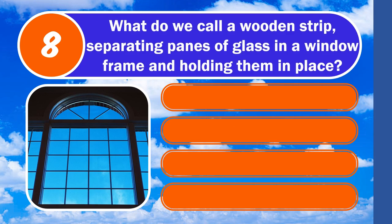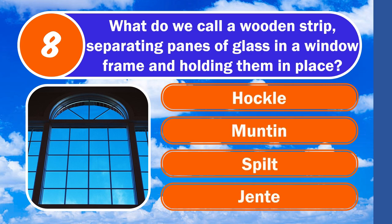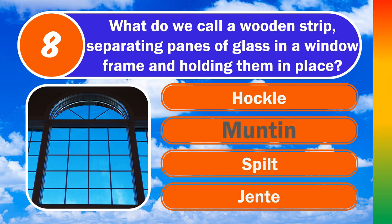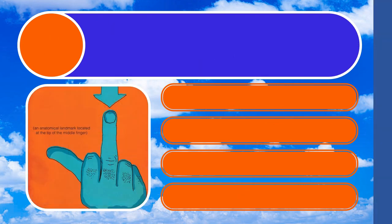Question number eight: what do we call a wooden strip separating panes of glass in a window frame and holding them in place? Is it Hockel, Muntin, Spilt, or Gent? The answer is muntin.